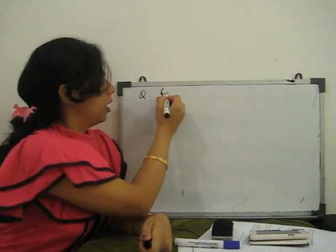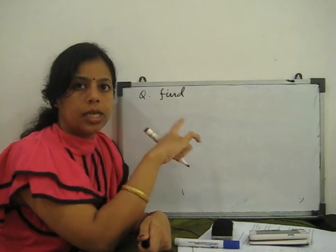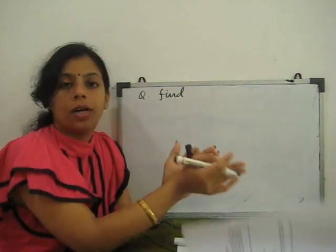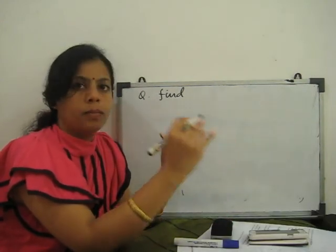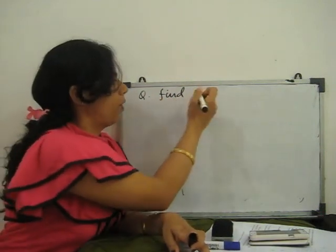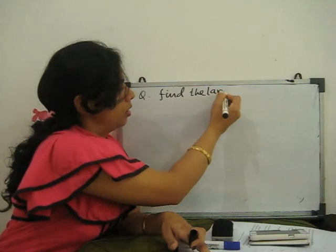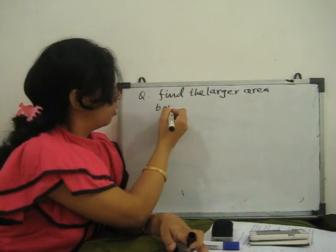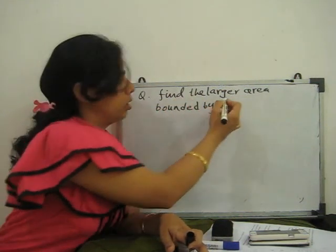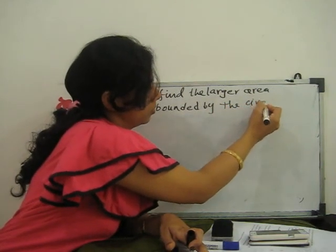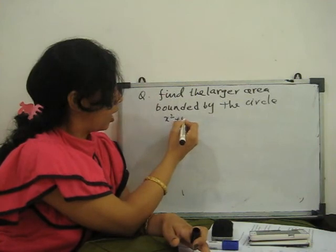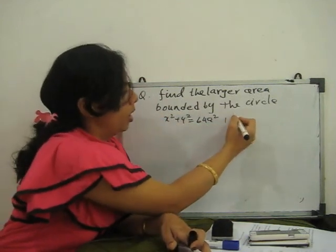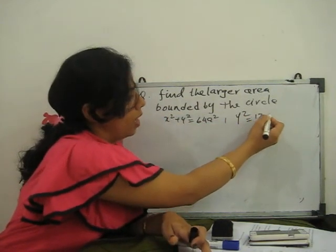Find the larger area. You have to read the question carefully — what area they want: entire area, larger area, first of ten, second of ten, or between them. So in this question, find the larger area bounded by the circle x² + y² = 64a², meaning the radius is 8a, and the parabola y² = 12ax.